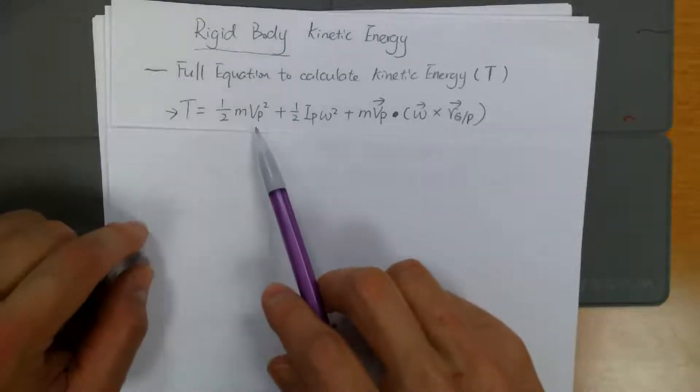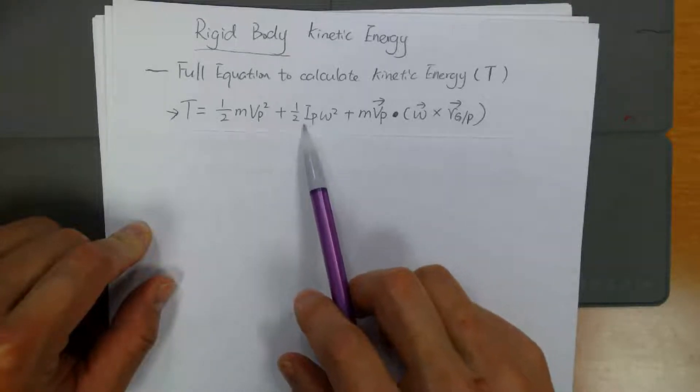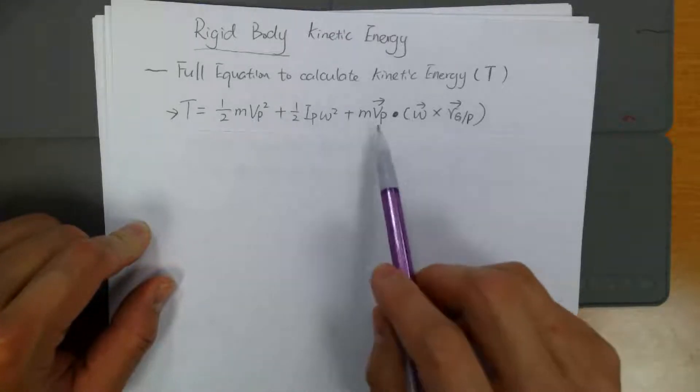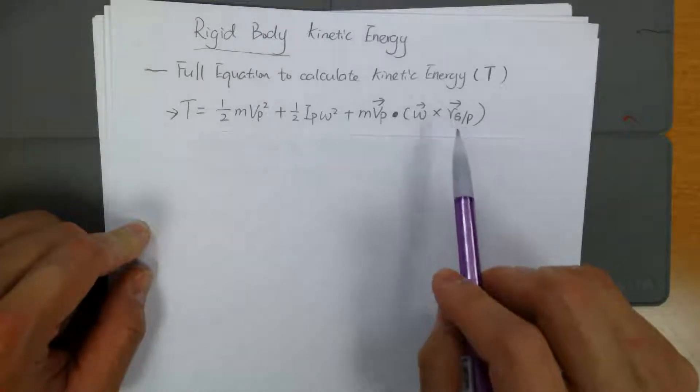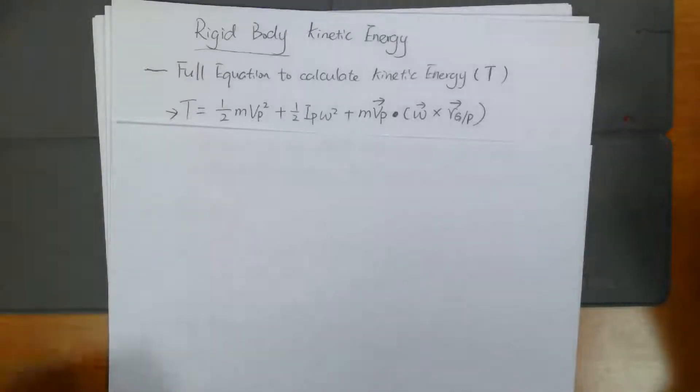Because this speed is going to be dependent on the point you pick on the rigid body. And this mass moment of inertia is going to be dependent on which point you pick. And also this position vector Rg/p depends on which point you use.